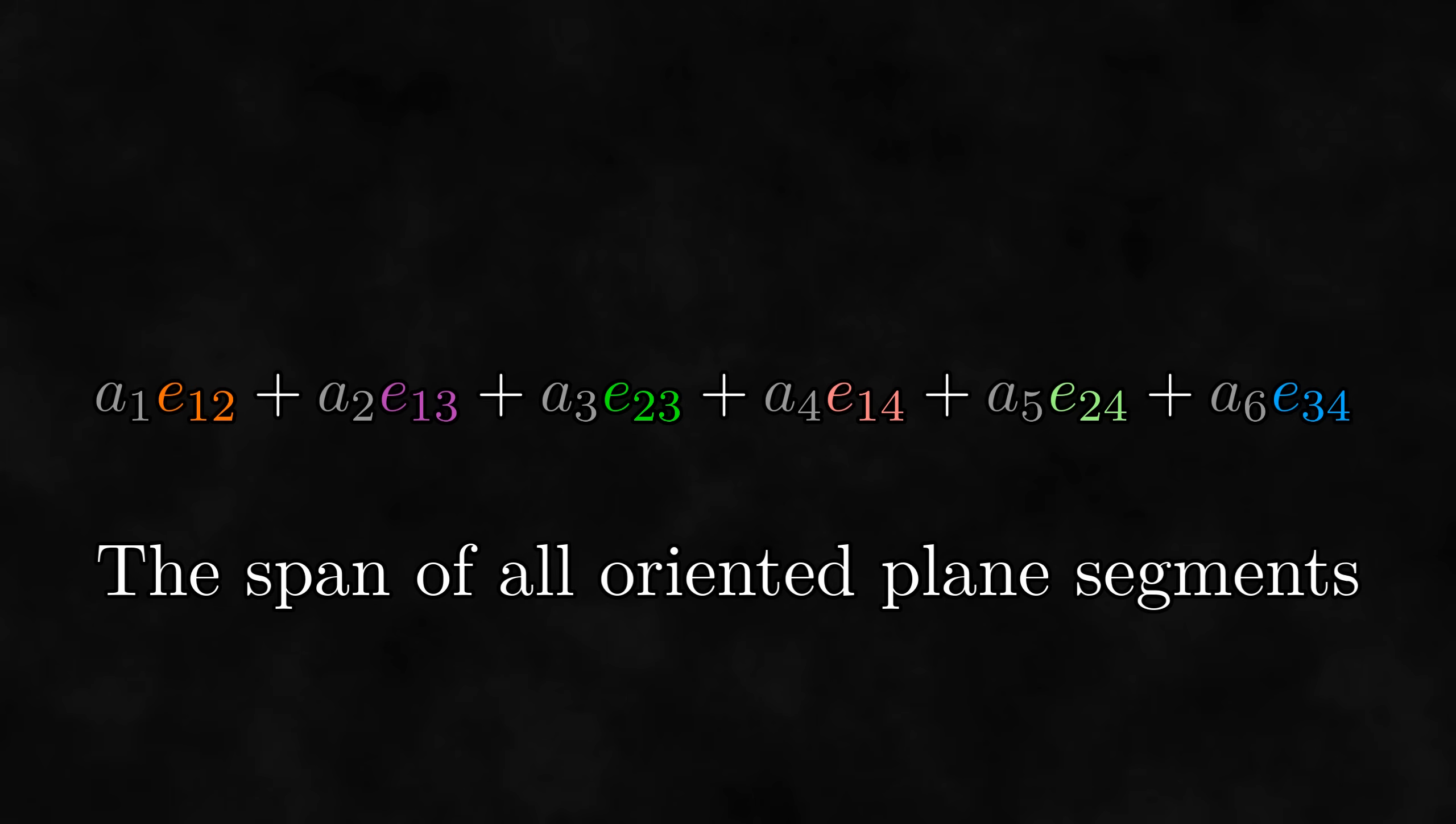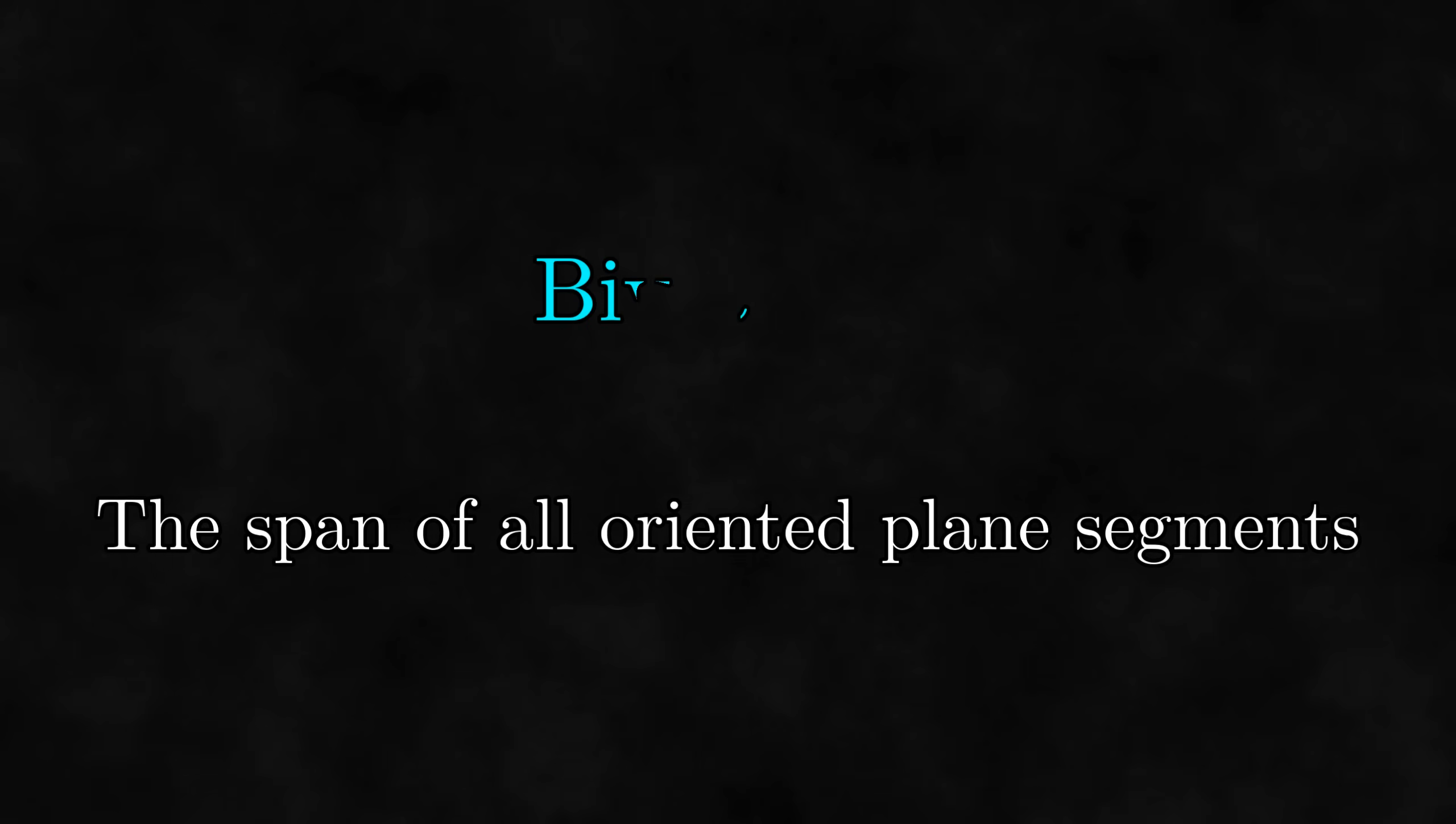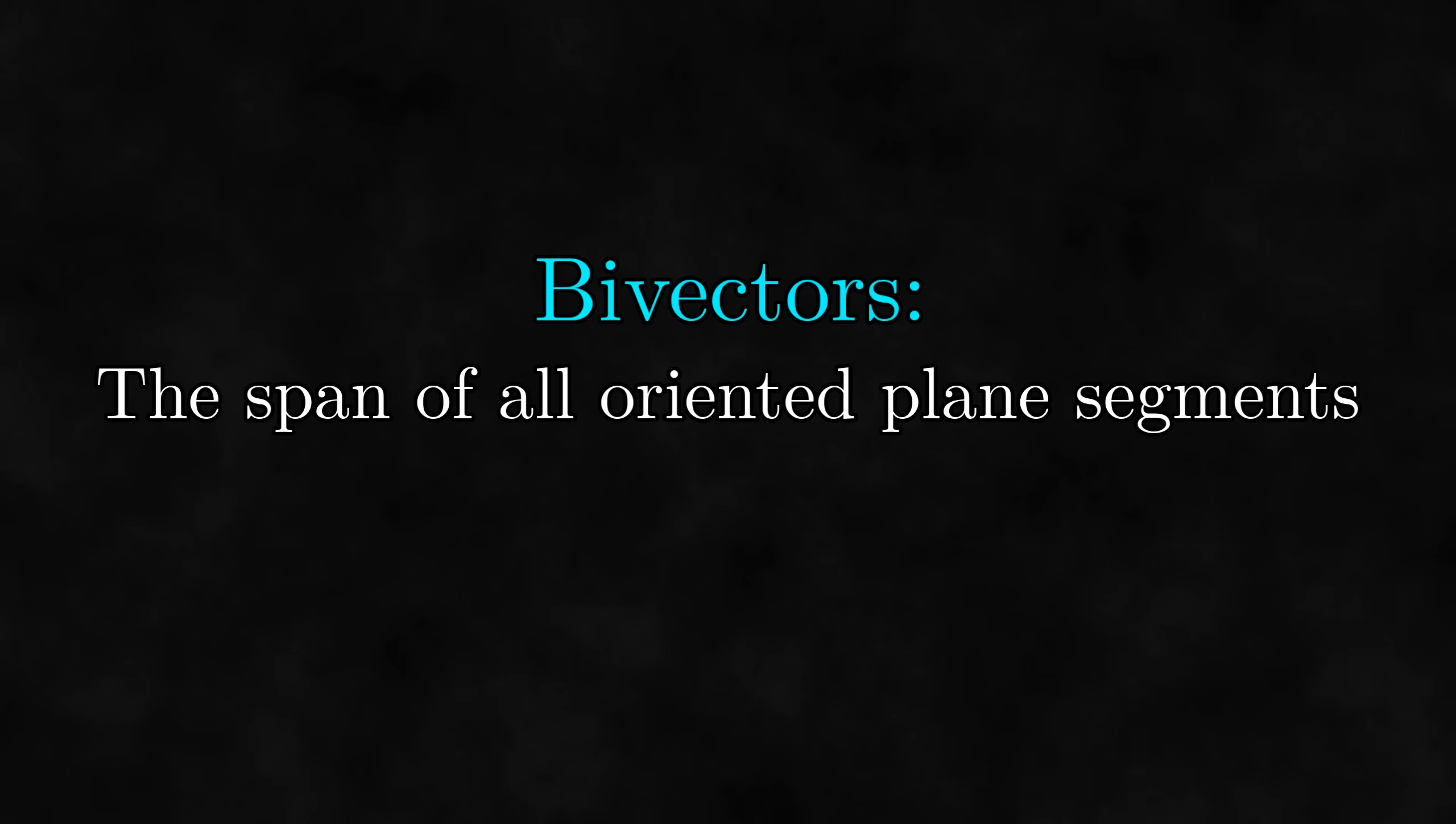And in general we want to avoid the use of bases as much as possible. So this will be our true definition of bivectors, the span of all oriented plane segments. But wait, this is geometric algebra! We still don't have a way to think of the sum of E12 and E34 geometrically.